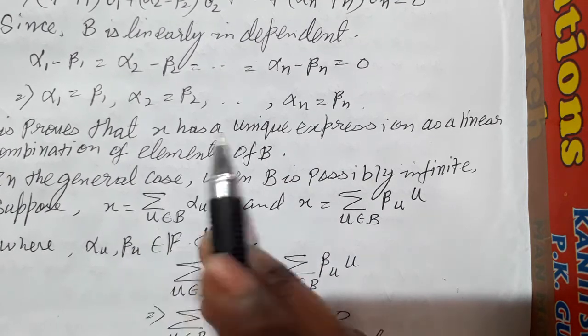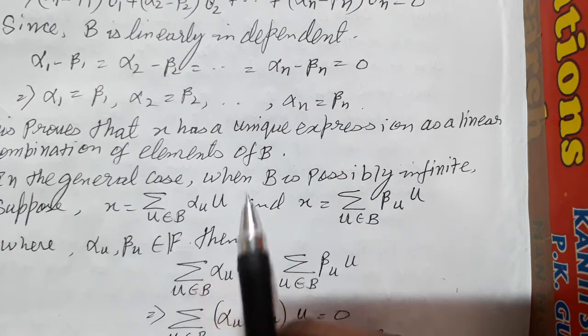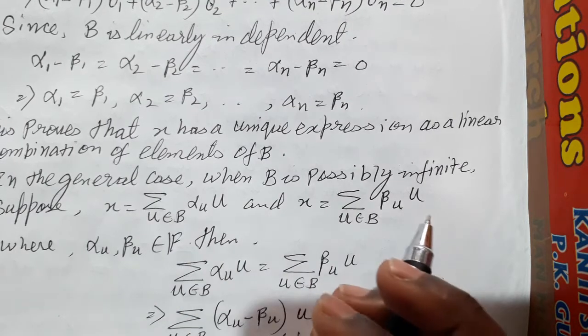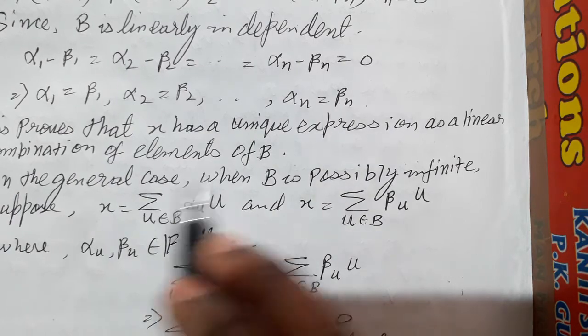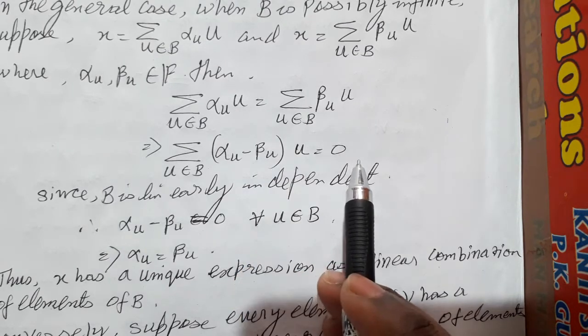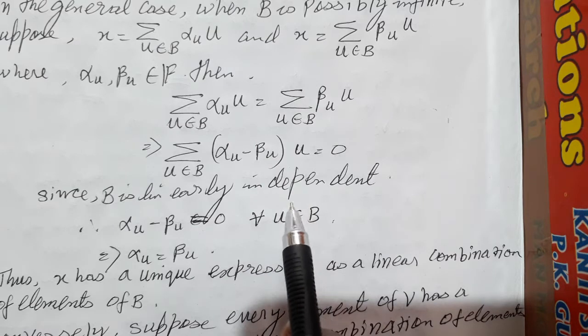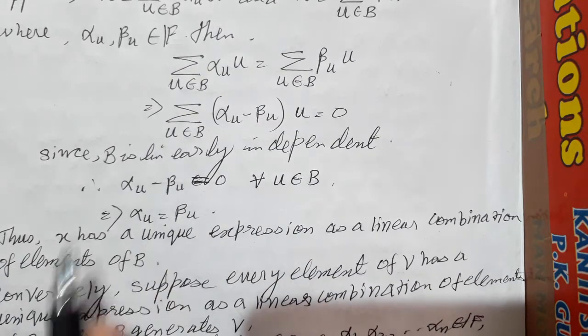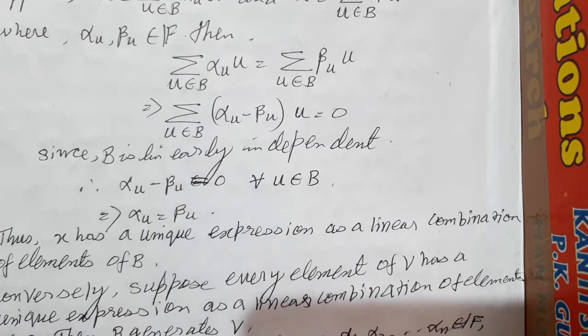In the general case, suppose we take an infinite basis, so B is possibly infinite. X can be written as a linear combination of elements of B in two ways. Since B is a linearly independent set, the scalars must be zero. So we have alpha_U minus beta_U = 0 for all U belonging to B, which implies alpha_U = beta_U. Thus X has a unique expression as a linear combination of the elements of B — that linear combination is unique.